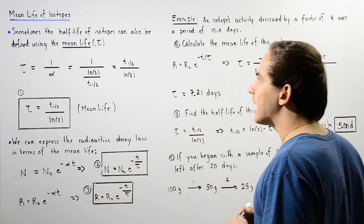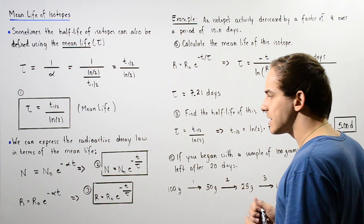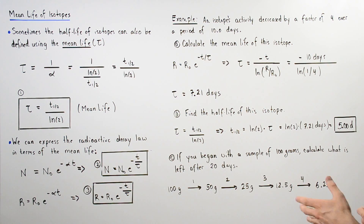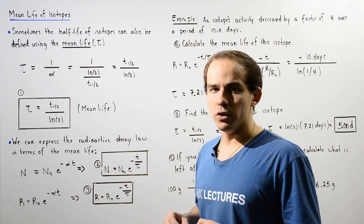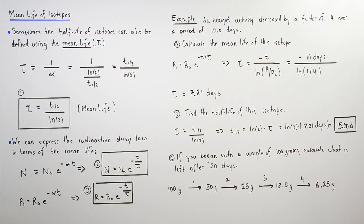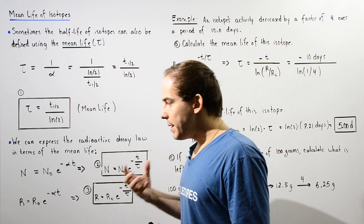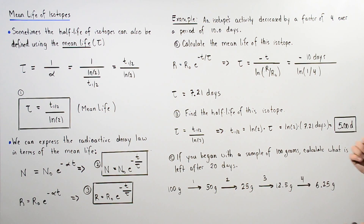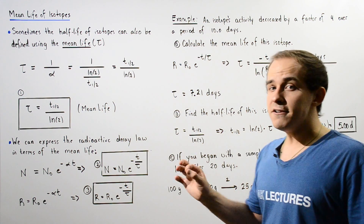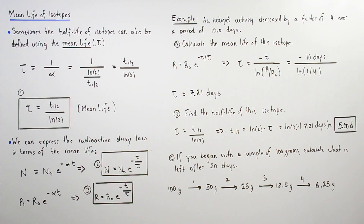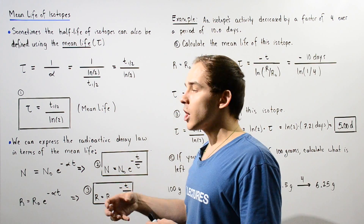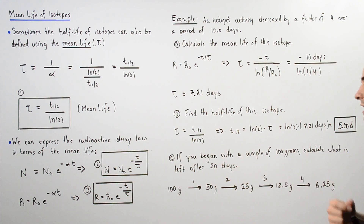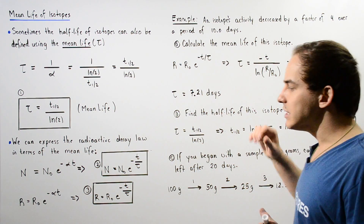Now that we've defined the mean life and expressed our radioactive decay laws in terms of tau, let's look at the following example. An isotope's activity decreased by a factor of 4 over a period of 10 days. In part A, we'll calculate the mean life of this isotope. In part B, we'll find the half-life. And in part C, if we begin with a sample of 100 grams, we'll calculate what is left over after 20 days.